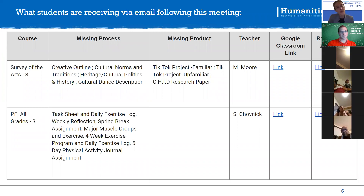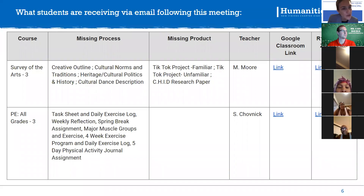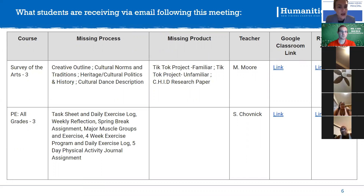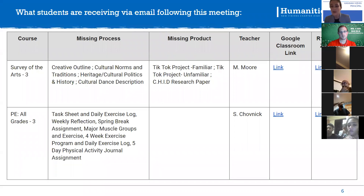This is an example of what's going to be mailed home via certified mail, as well as what students are receiving in their email. It lists what assignments are missing, the teacher, the link to the classroom, and the link to the R1 Reflection every Wednesday at 1:00. When students dialogue with their teachers, teachers will be strategic — for example, in Survey of the Arts, they might say: complete the TikTok project, that's enough for you to pass. Students, you can be strategic in completing assignments that will push you over to passing.